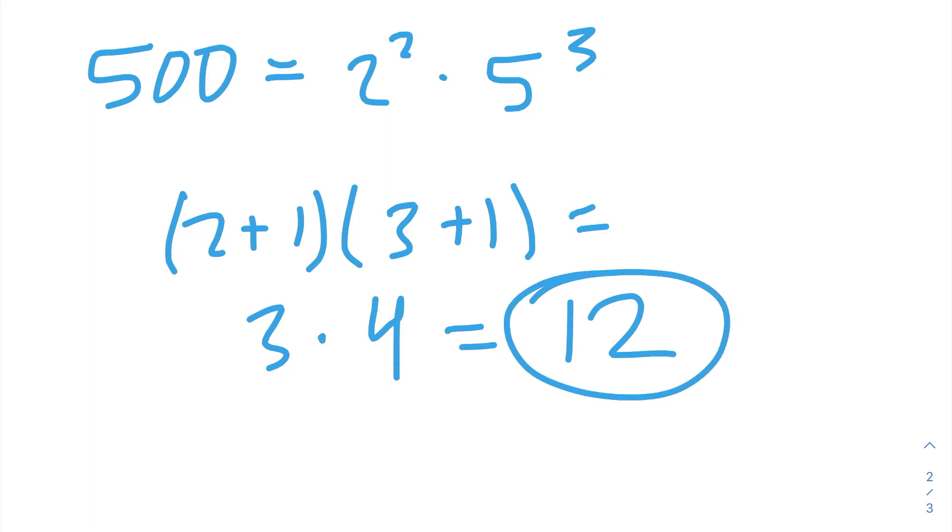Let's try 500. The prime factorization of 500 is 2 to the power of 2 times 5 to the power of 3. We take these 2 exponents, add 1 to each of them, and then we multiply them, and we will get our answer. So, 500 must have 12 factors.